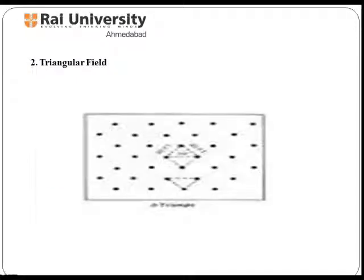In a triangle field, vegetables are planted similarly to the square field, but the plants in the second, fourth, and sixth rows are alternative rows.